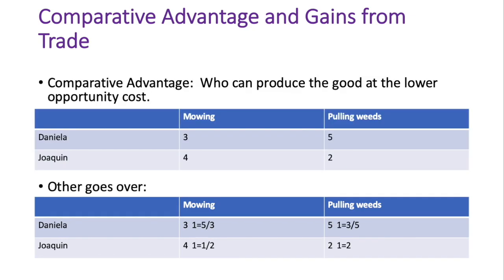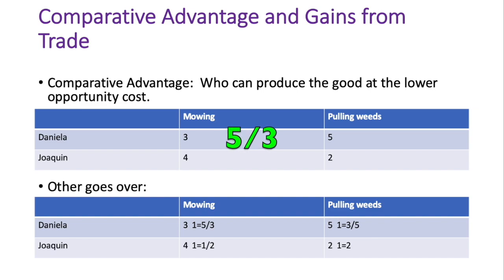Comparative advantage is who can produce more of a good at a lower opportunity cost. To determine opportunity cost, you take the value of the other good and put it over the first to make a fraction. For Daniela, one mowing lawn equals five-thirds of pulling weeds, and taking the reciprocal gives you one bag of pulling weeds equals three-fifths of a mowed lawn.